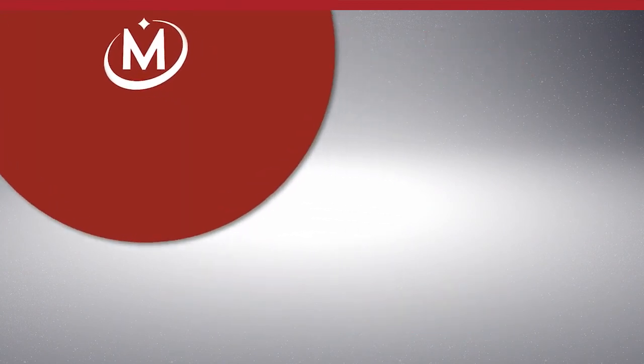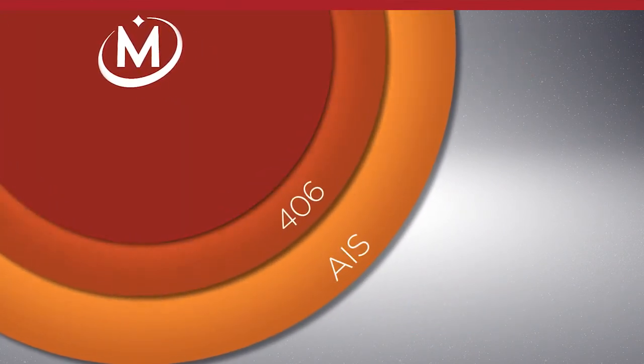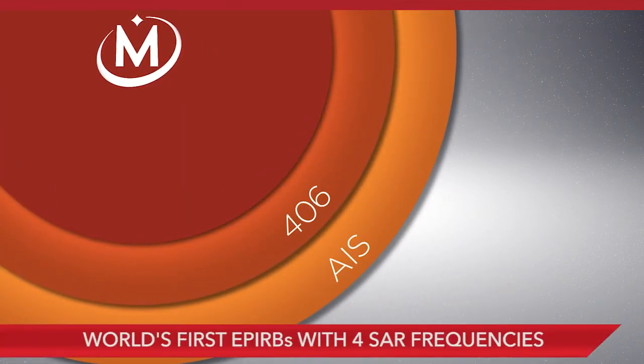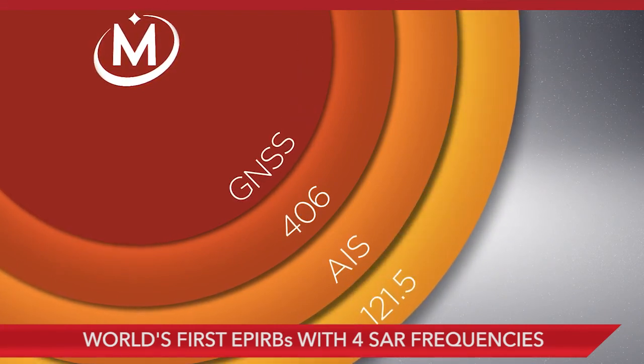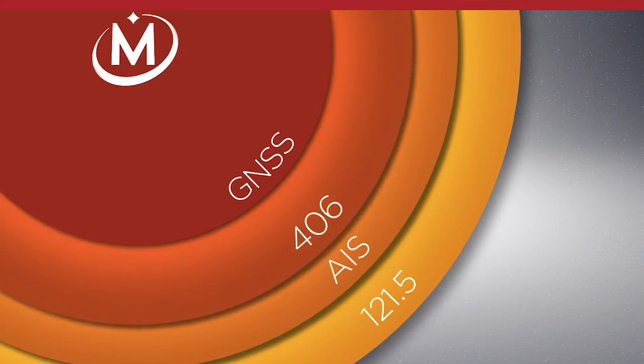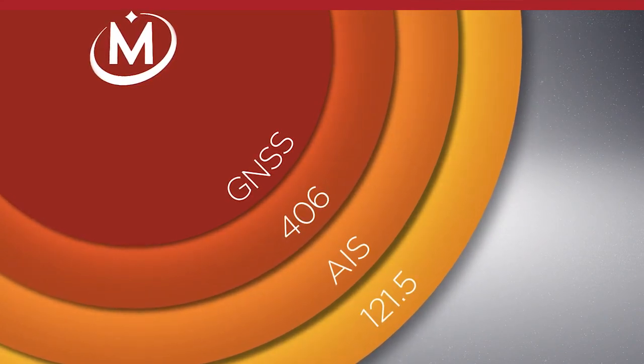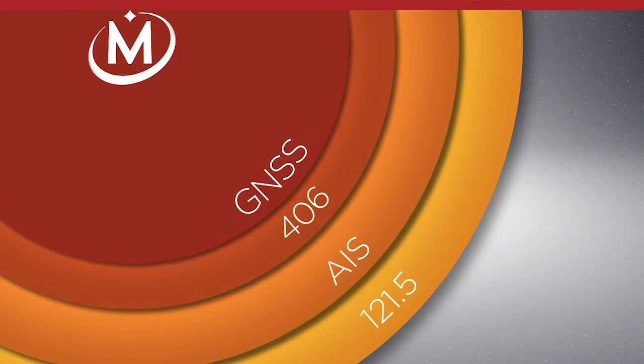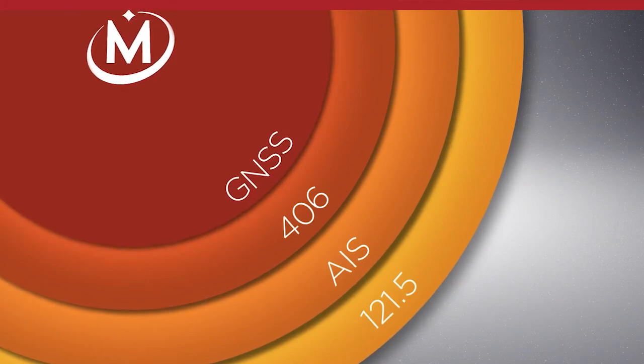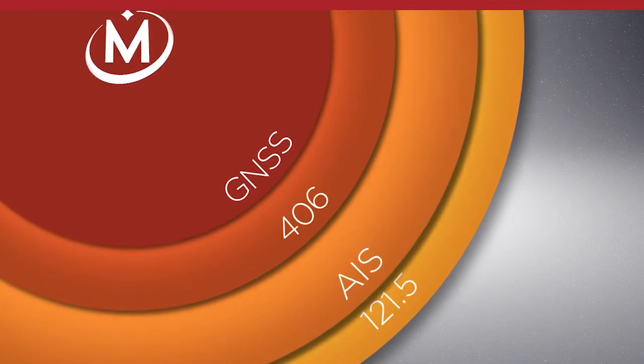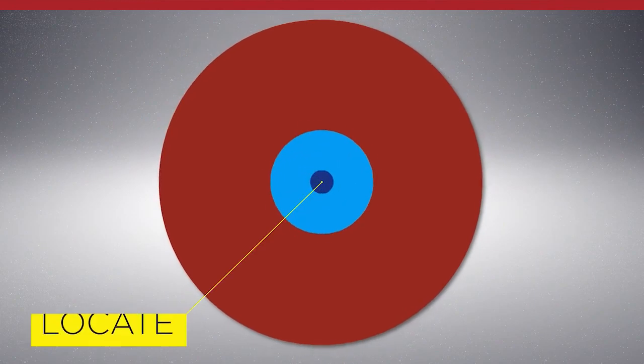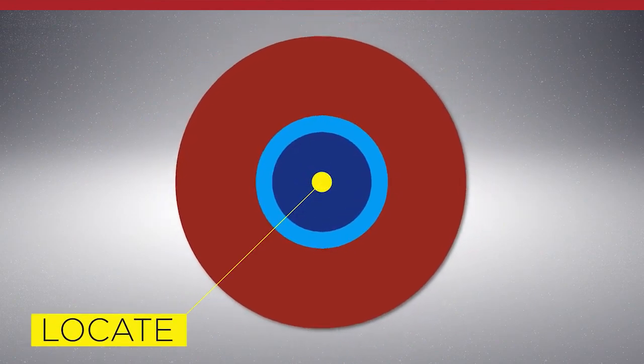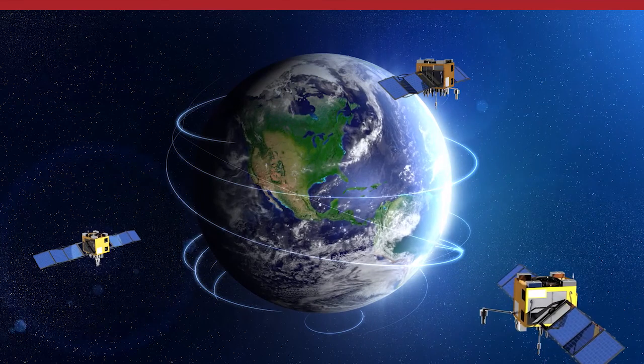Not only do these new EPIRBs combine AIS and 406, in fact they're the world's first EPIRBs to incorporate four search and rescue frequencies, including 406 MHz and 121.5 MHz for beacon transmission, GNSS, better known as GPS, for enhanced position detection, and AIS for localized connectivity. This powerful combination provides greater speed and accuracy for locating people or vessels in distress within the smallest possible search area.